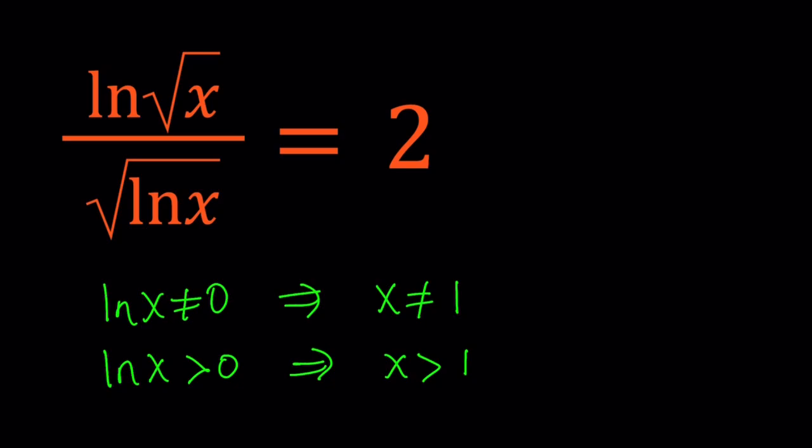And this implies that x is greater than 1. So if x is greater than 1, we're good because x is not going to equal 1 in that case. But we also have the requirement that x is greater than or equal to 0, but that's already covered by x is greater than 1.